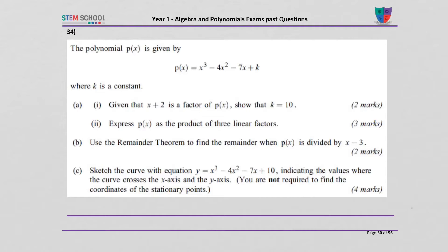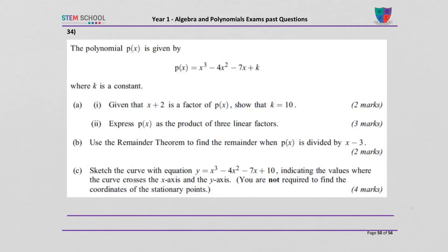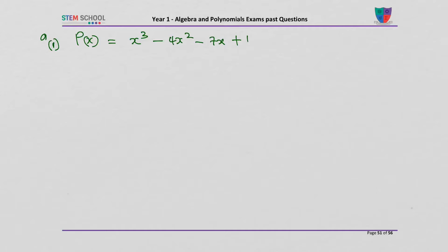Part A, part 1: given that x plus 2 is a factor of P of x, show that k equals 10. P of x equals x cubed minus 4x squared minus 7x plus k. We've been told that x plus 2 is a factor, so we set that to 0 and get the root. Therefore, x equals minus 2.